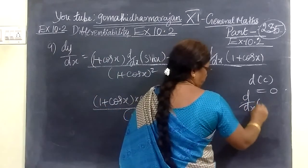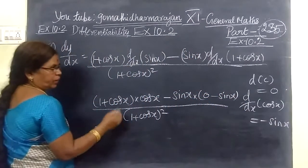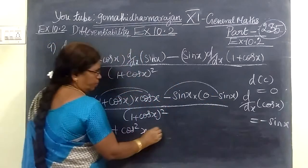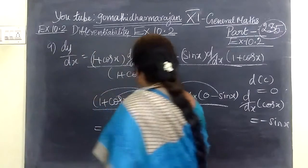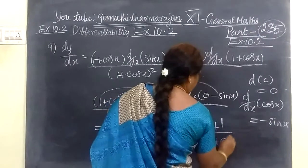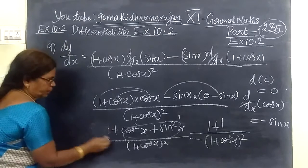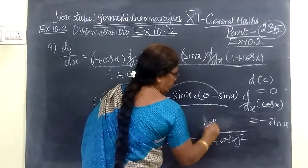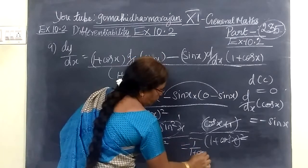d by dx of cos x equals minus sin x, so here you write minus sin x. So in the numerator: (1 plus cos x) times 1, minus into minus gives plus, so sin x into sin x. Then denominator is (1 plus cos x) whole square. This is nothing but 1 plus cos x over (1 plus cos x) whole square, which simplifies.